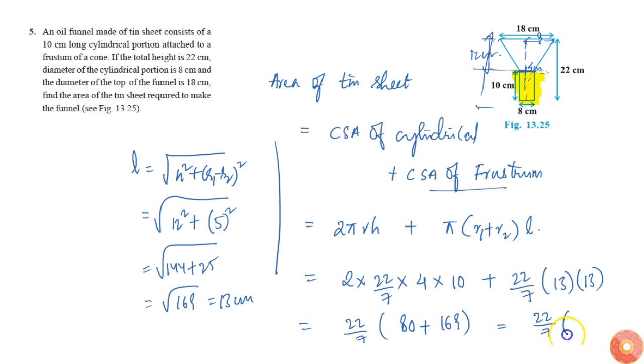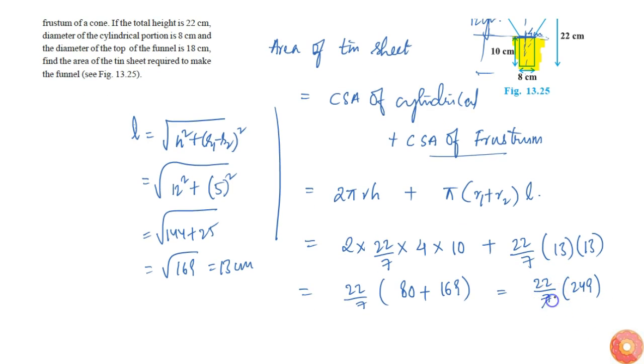Taking (22/7) common, this becomes 80 plus 169, which equals 249. So (22/7) × 249 equals approximately 782.22 square centimeters.